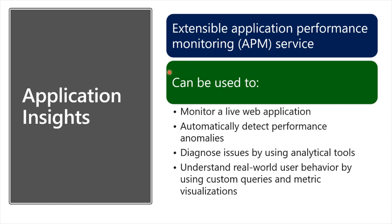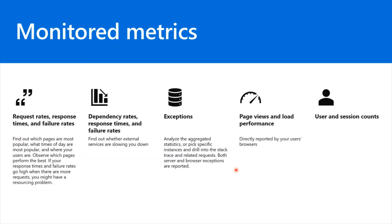Application Insights is an extensible Application Performance Management (APM) service for web developers on multiple platforms. Use it to monitor your live web application — it will automatically detect performance anomalies. It includes powerful analytics tools to help you diagnose issues and understand what users actually do with your app. It monitors live web applications, automatically detects performance anomalies, helps diagnose issues, and helps you understand real-world user behavior using custom queries, metrics, and visualizations.